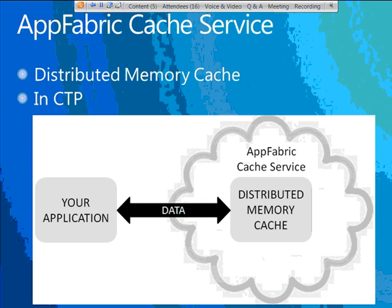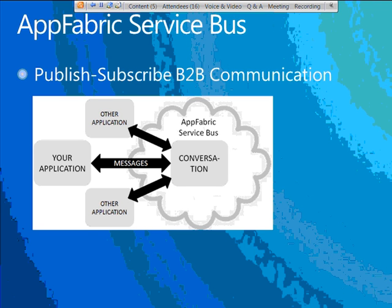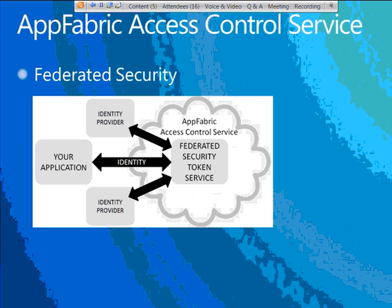The third area is AppFabric. We have the AppFabric Cache Service — one of the services we're talking about today. Two other services that have been there all along are the AppFabric Service Bus, which gives you publish-and-subscribe communication particularly good for business-to-business scenarios, and the AppFabric Access Control Service, which gives you federated security through claims-based identity supporting the world's security systems. If you looked at the platform a year ago, the number of services has almost doubled. The platform is always being extended and innovated.